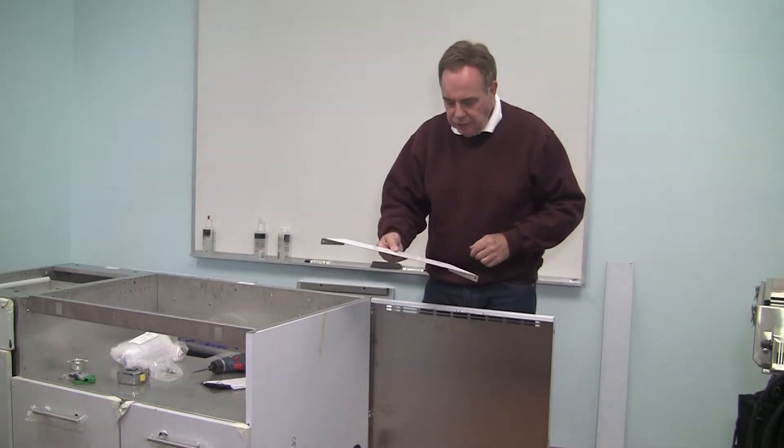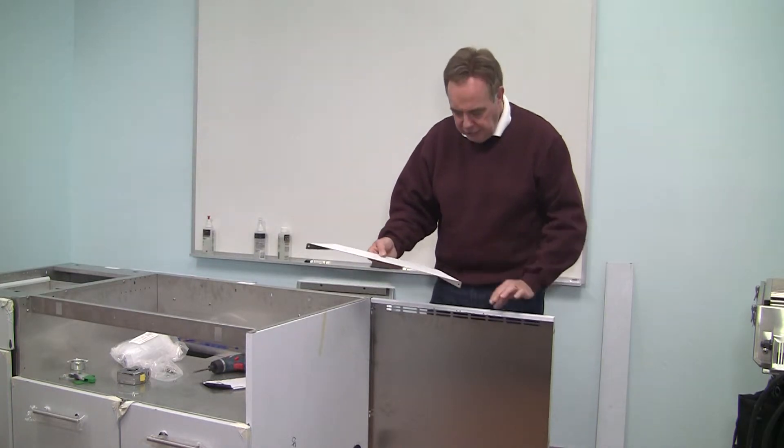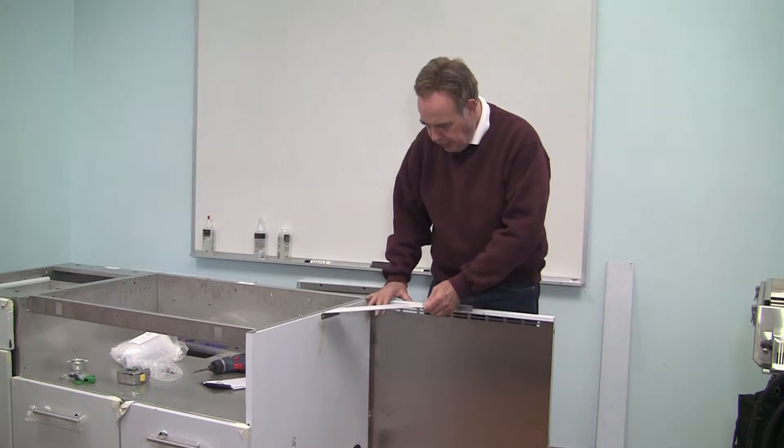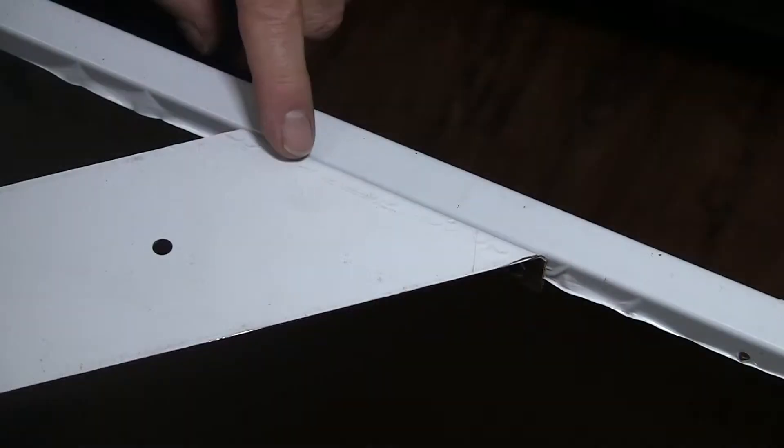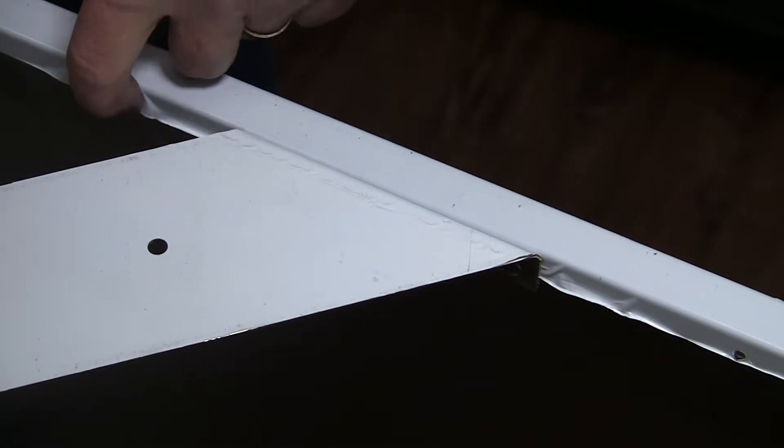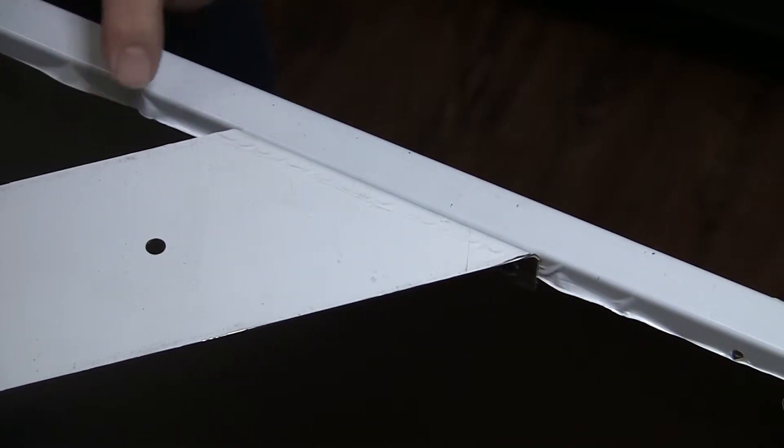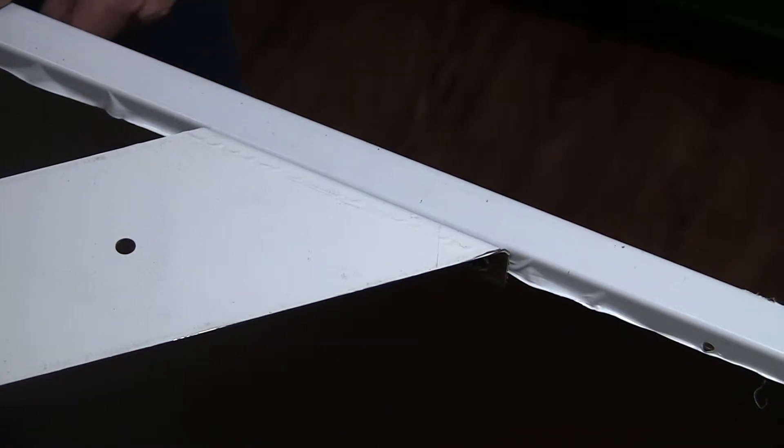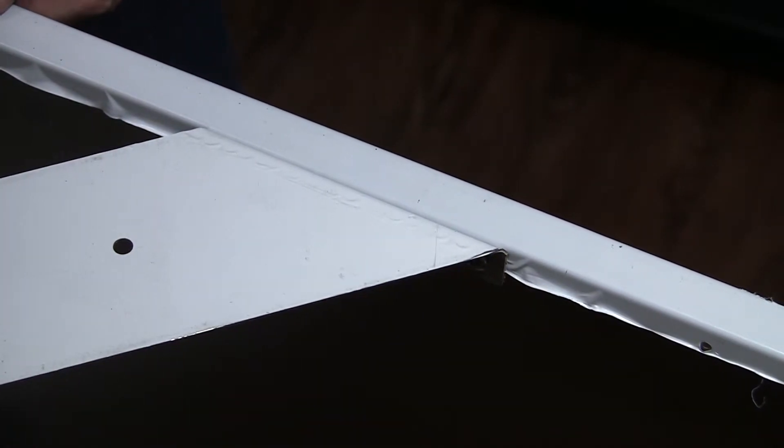Then there is an angled bracket that attaches to the refrigerator spacer and to the side of the cabinet. The angled bracket attaches to the inside of the refrigerator spacer and there are holes drilled to accept the screws.